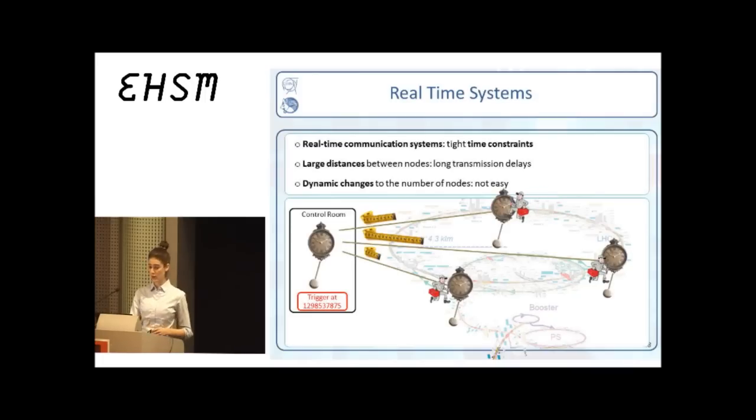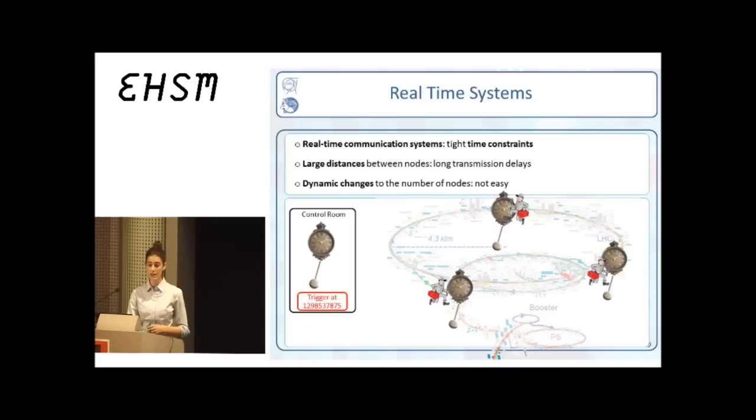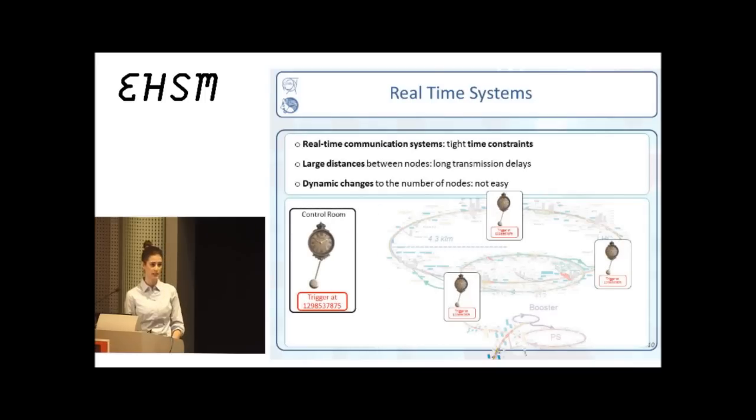With White Rabbit, transmission delays and clock offsets are automatically compensated, and we manage to have a common notion of time in the entire network automatically.